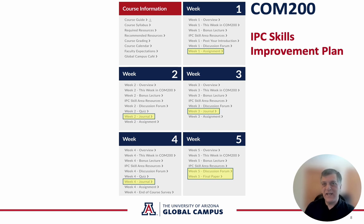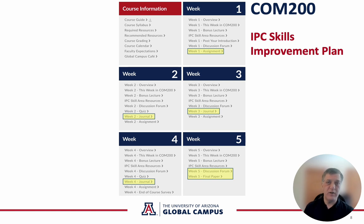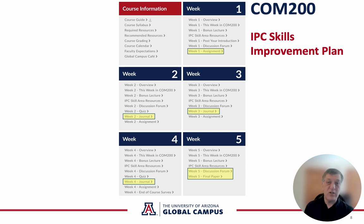The Interpersonal Communication Skills Improvement Plan is the thread that runs through the course, and you'll be doing some work on it each week. In week one, you do an assessment that helps you identify an interpersonal communication skill area that you want to improve, and your week one paper is your plan for doing that. Please read the instructions for the week one paper carefully and make sure you get that in, because so much of your work in the rest of the course is based on it.